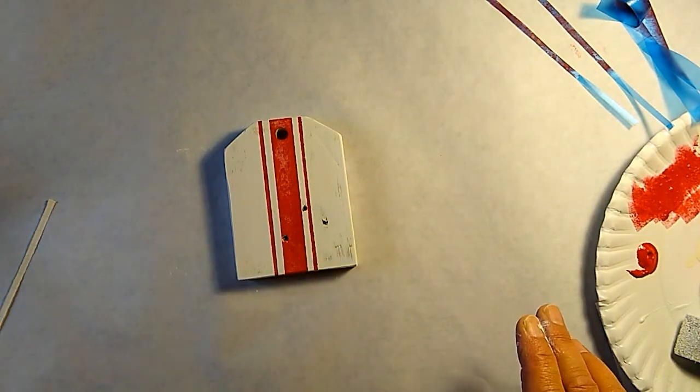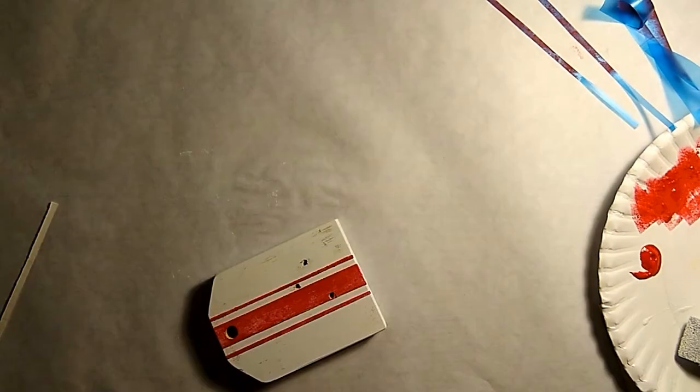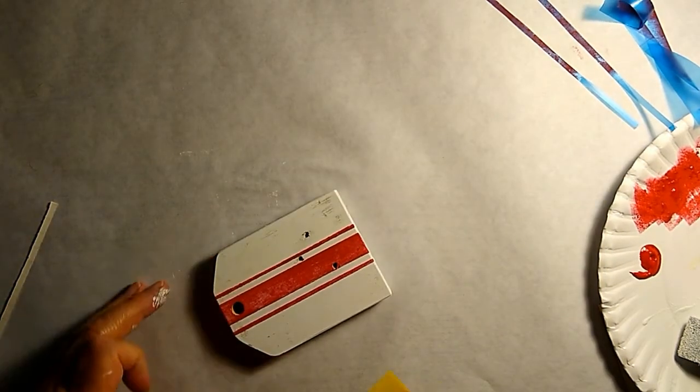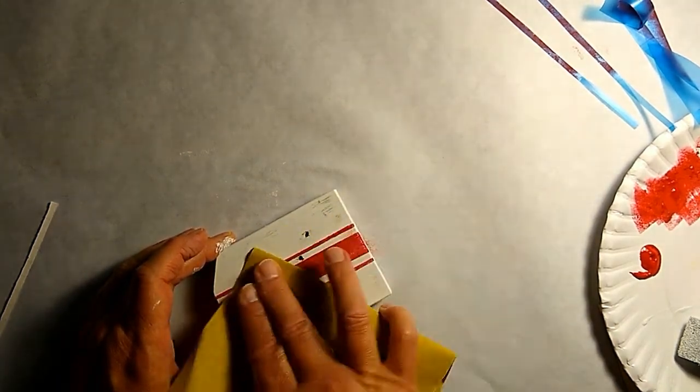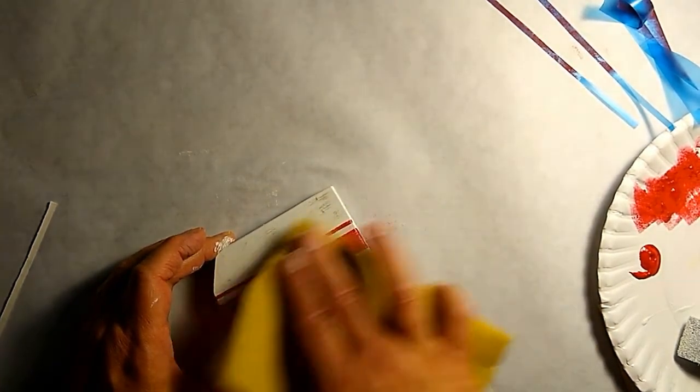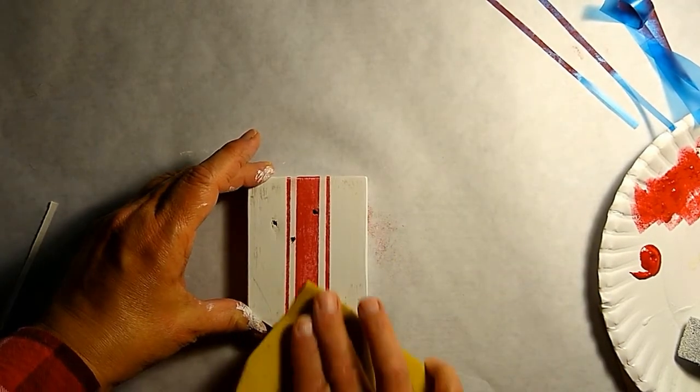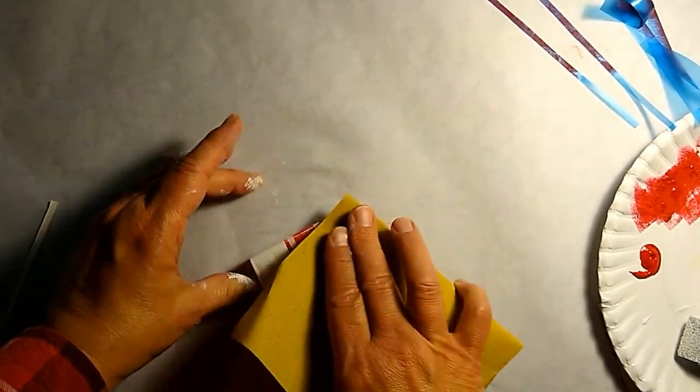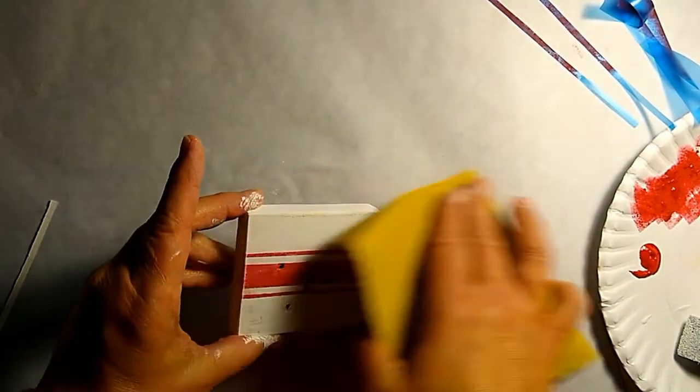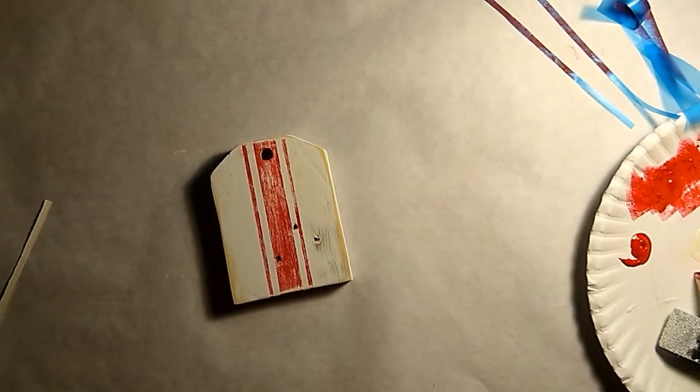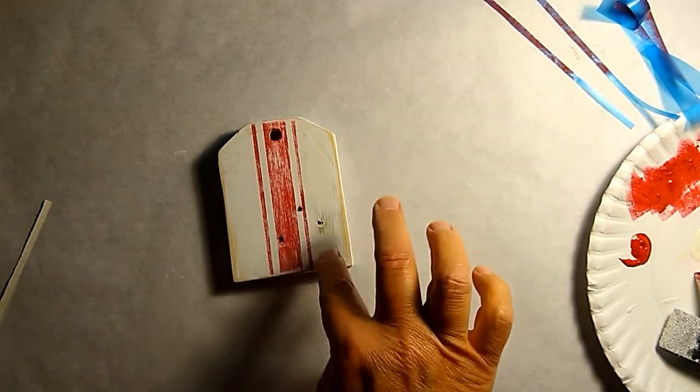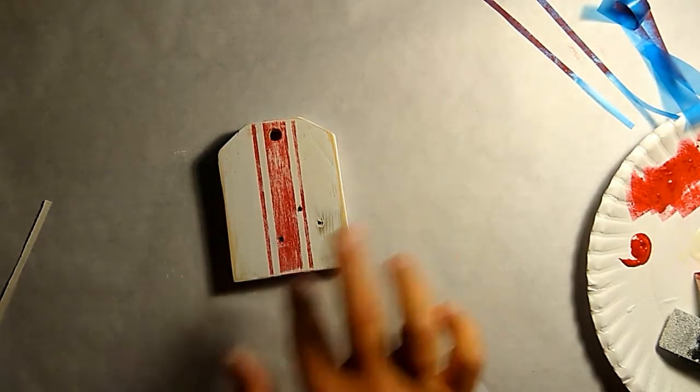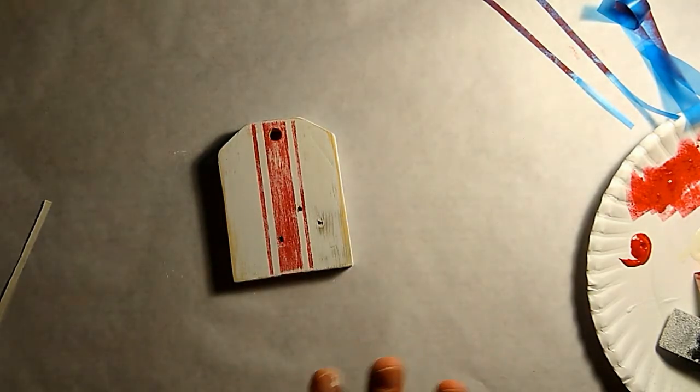Before I put my stencil on, I'm just going to go in here with a little bit of 150 grit sandpaper and just rough this up a little bit, give this a little bit more vintage distressed look. This wood had a little bit of a gray over here and so that's showing through a little bit now that I've done a little bit of sanding.